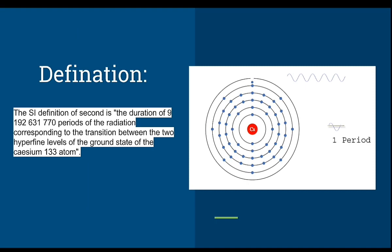So the SI definition of second is the duration of 9,192,631,770 periods of the radiation corresponding to the transition between two hyperfine levels of the ground state of the cesium-133 atom.